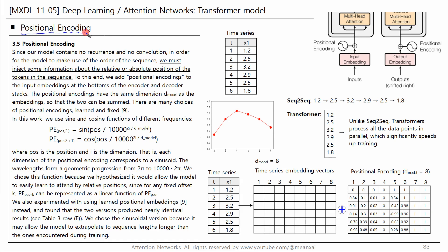Next, let's look at positional encoding. Since the transformer contains no recurrence and no convolution, in order for the model to make use of the order of the sequence, we must inject some information about the relative or absolute position of the tokens. For example, if we have a time-series where the second and fifth data points are equal to 2.5, the second 2.5 is on an upward path and the fifth 2.5 is on a downward path. These are represented by the same vector but must be handled differently.